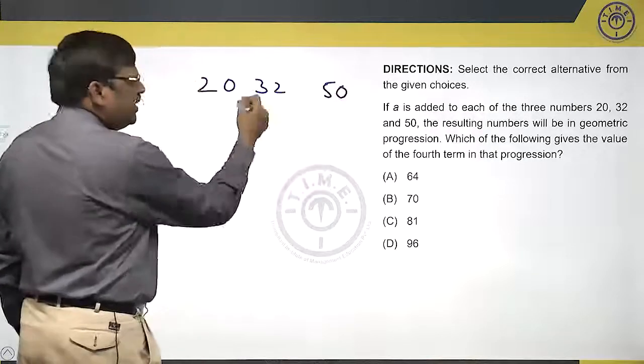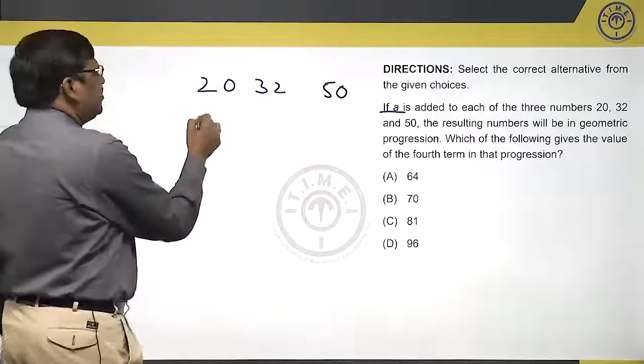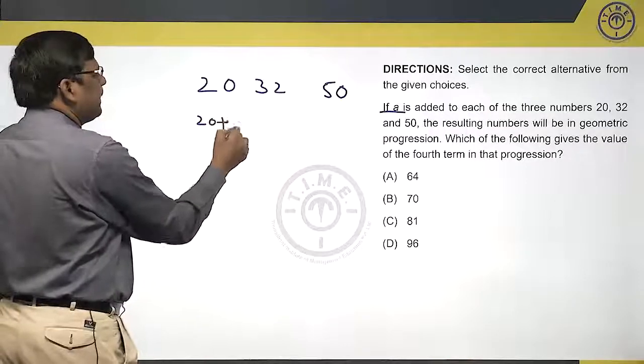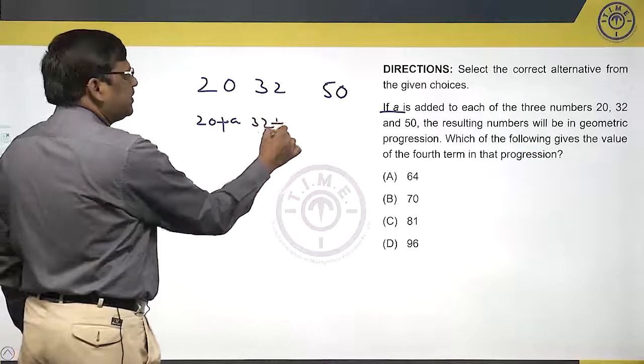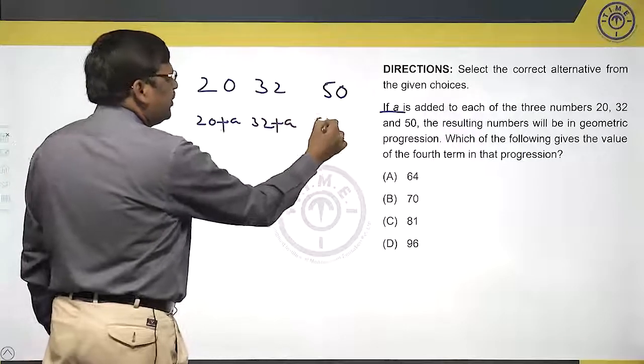If A is added to each of them, the numbers will be 20 plus A, 32 plus A and 50 plus A.